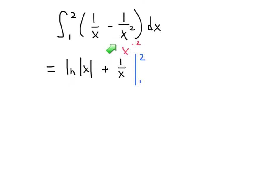x to the negative 2 does follow the power rule. You add 1 to it, you get x to the negative 1, and you also divide by negative 1, so that turns this negative sign into a positive sign. And I just wrote x to the negative 1 is 1 over x for convenience. Now we're ready to do the fundamental theorem.